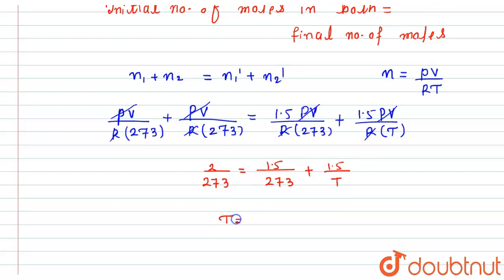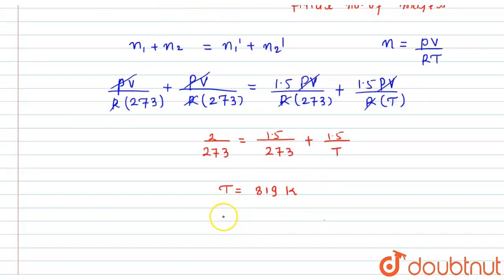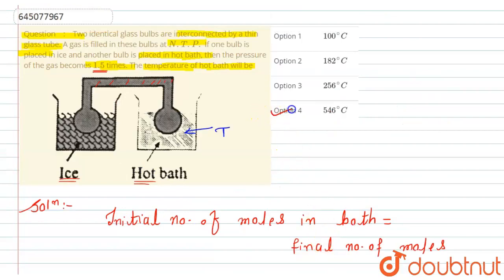Now after simplifying it, we get the temperature T equals 819 Kelvin. And if we convert it in Celsius, it would become 546 degrees Celsius. Now if you look to the option, option 4 will become correct answer for this question.